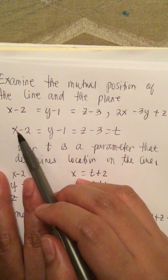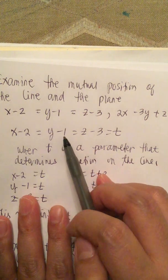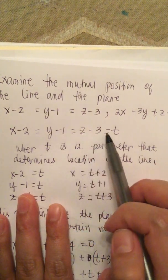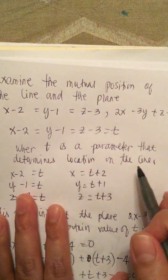So the line is x minus 2 equals y minus 1 equals z minus 3 equals t, where t is a parameter that determines location on the line.